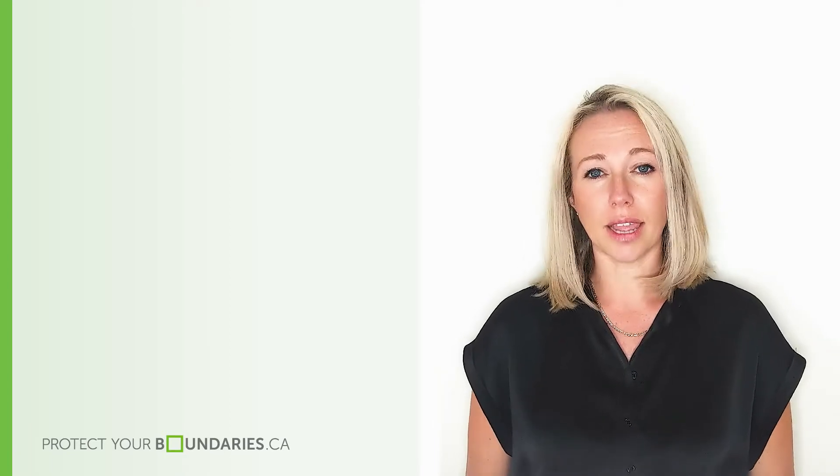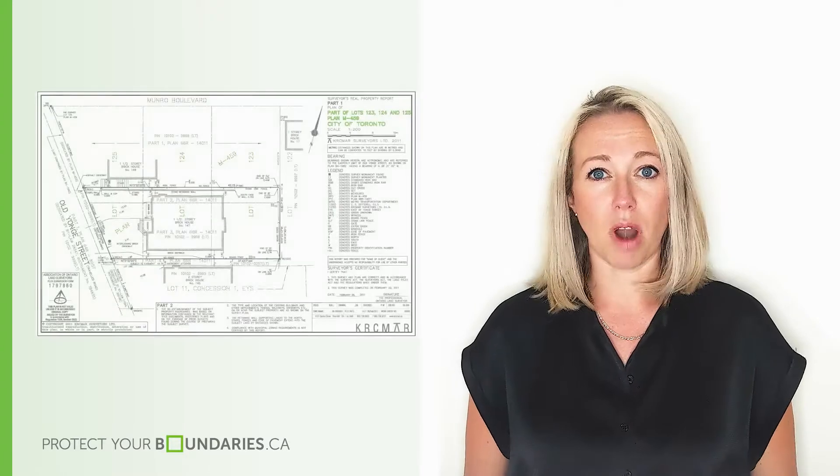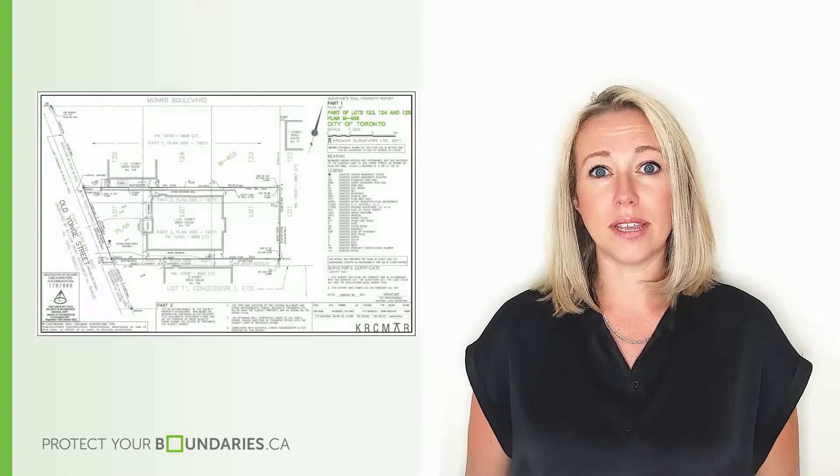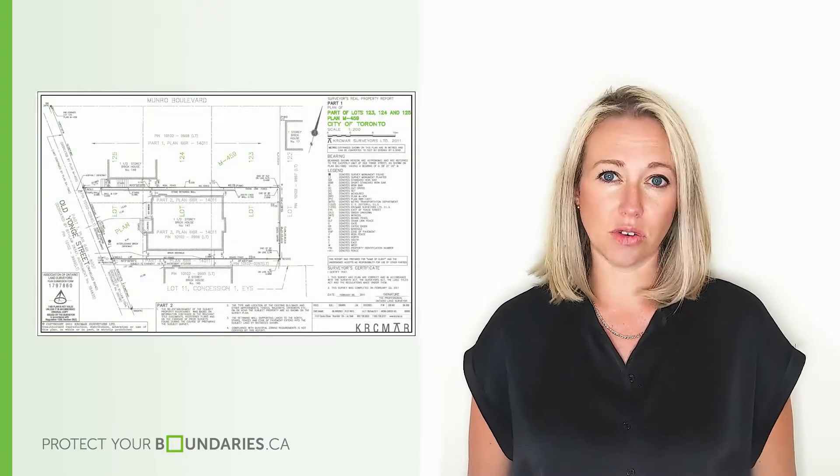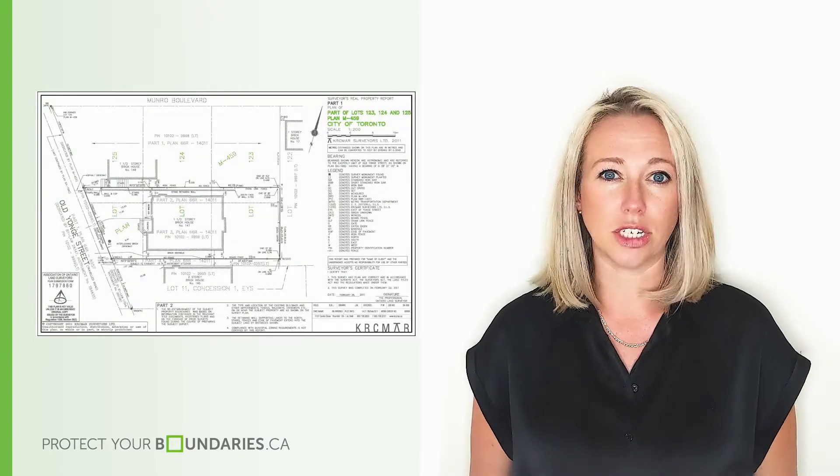In addition to street addresses, all Ontario properties are identified with a legal numbering system, which surveyors call underlying lot fabric. It is used to describe the property's physical and geographical location.